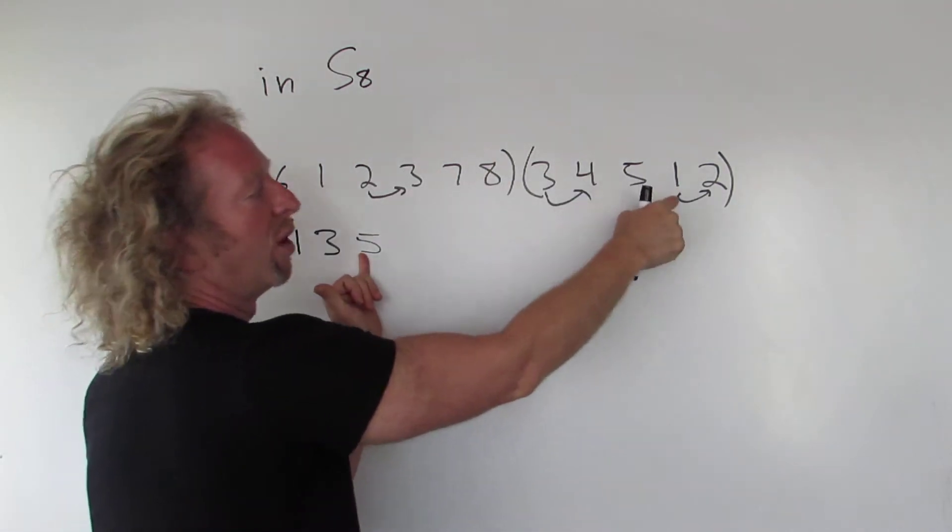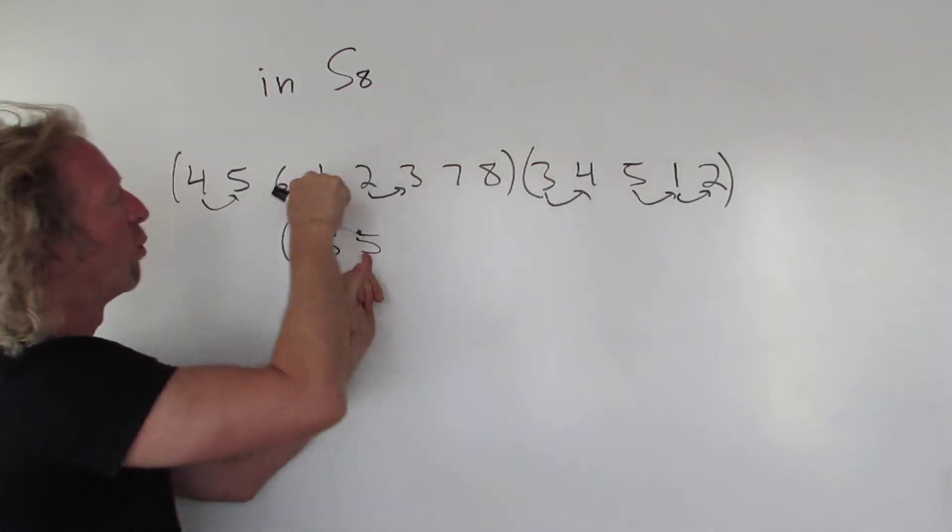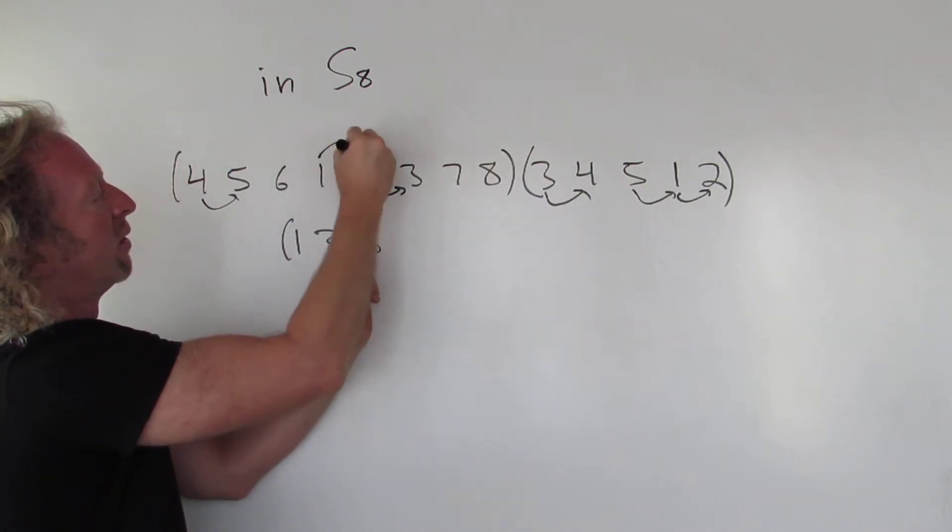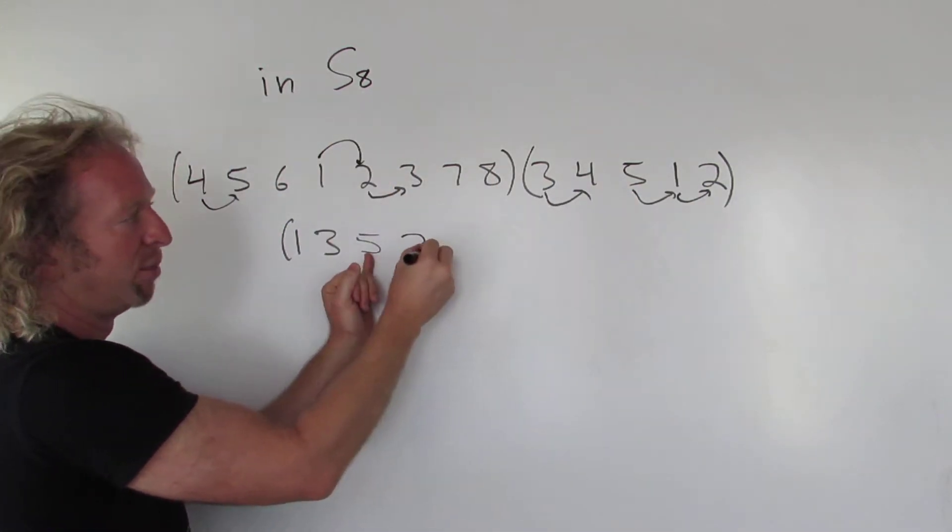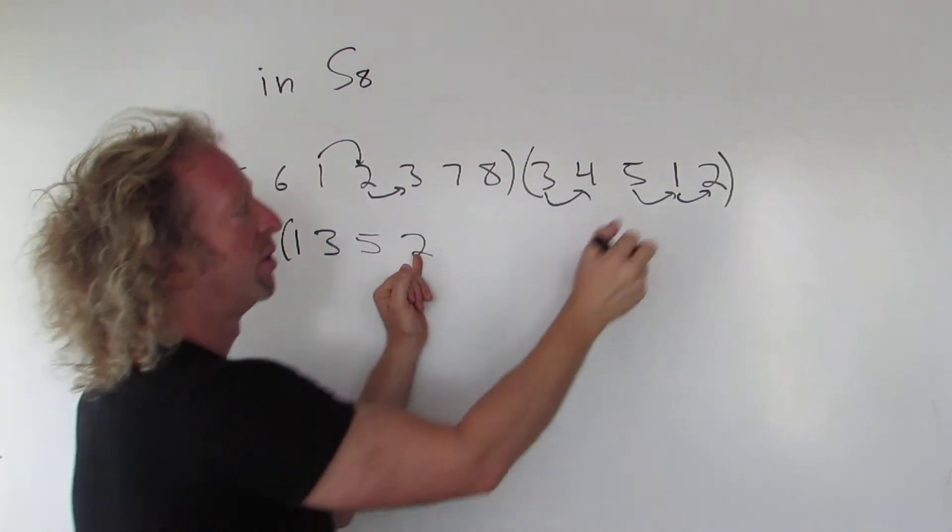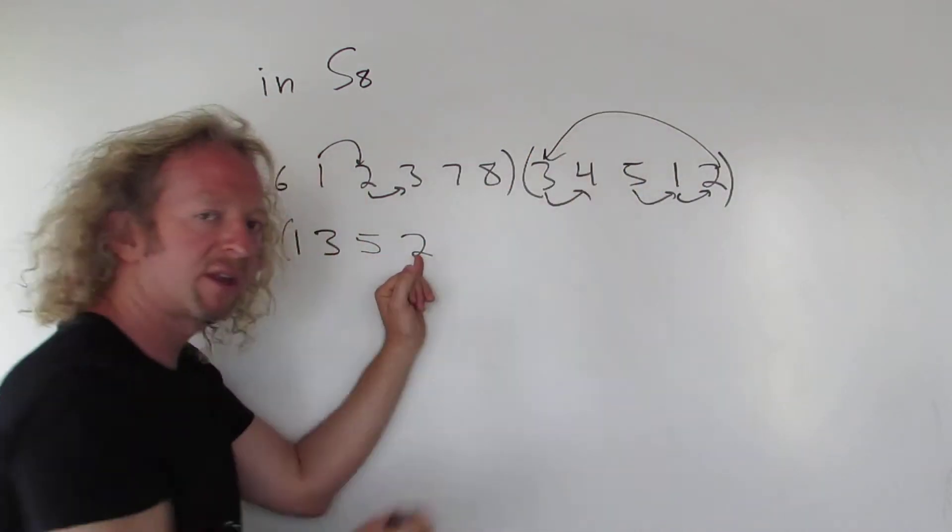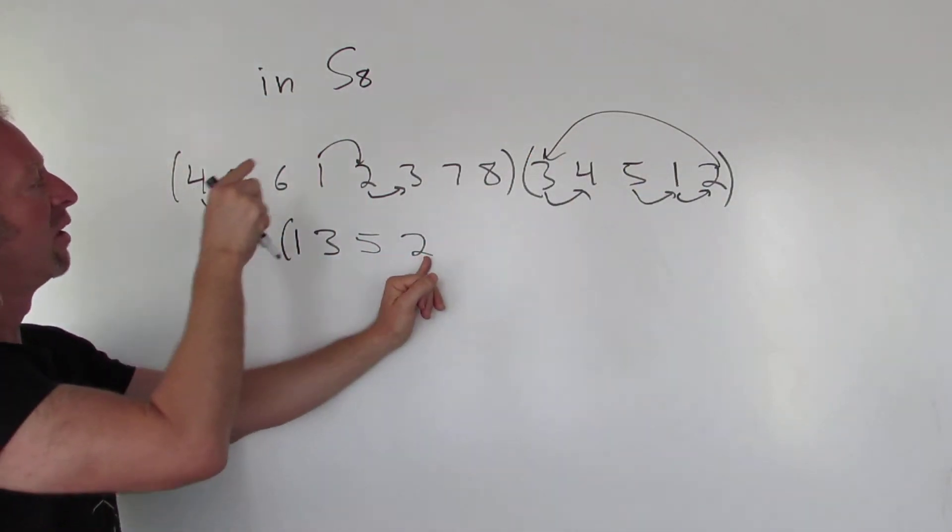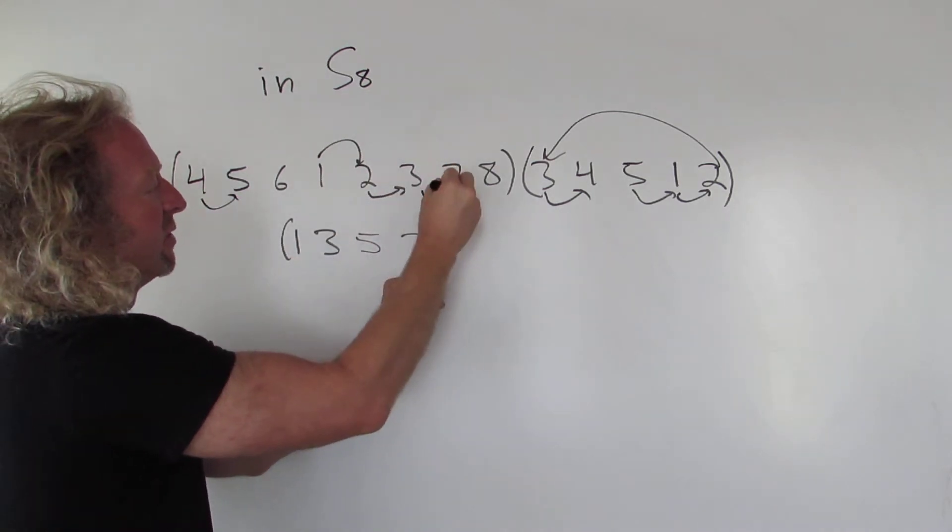5 goes to 1. So 1 goes to 2. That means 5 goes to 2. Going slow. 2 goes to 3. So now we look for the 3. 3 goes to 7. That means 2 goes to 7.